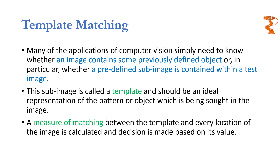The objective of template matching is to calculate some kind of measure of similarity between the template and all possible locations in an image. If the object represented by the template is present somewhere in the image, at that location the similarity measure is going to be the largest, whereas at other locations it will be quite low. Once the template has swept the image completely, you just need to find the location where the similarity measure is maximum.